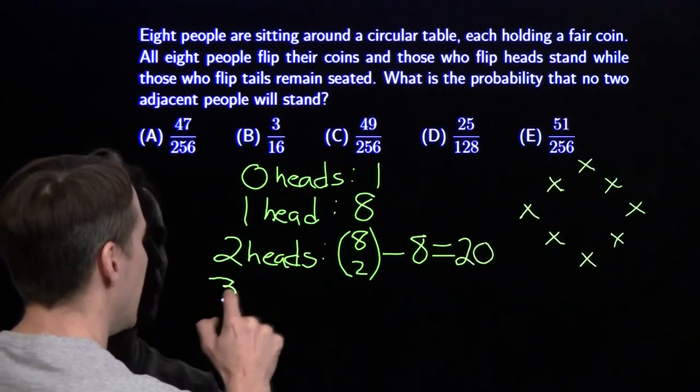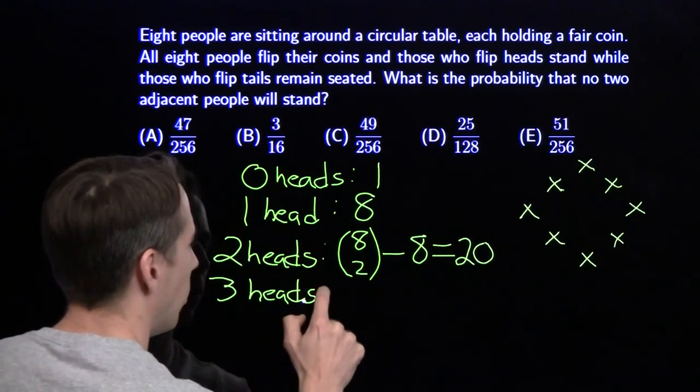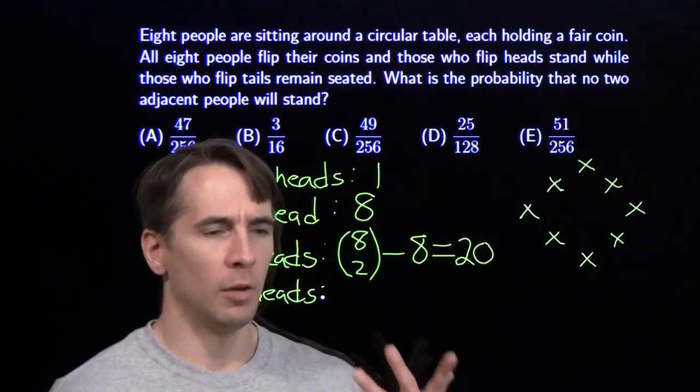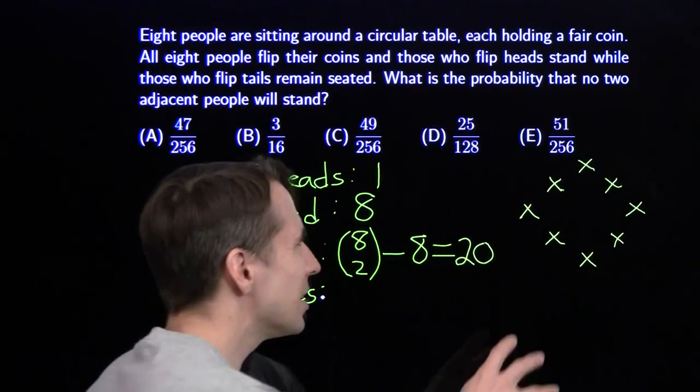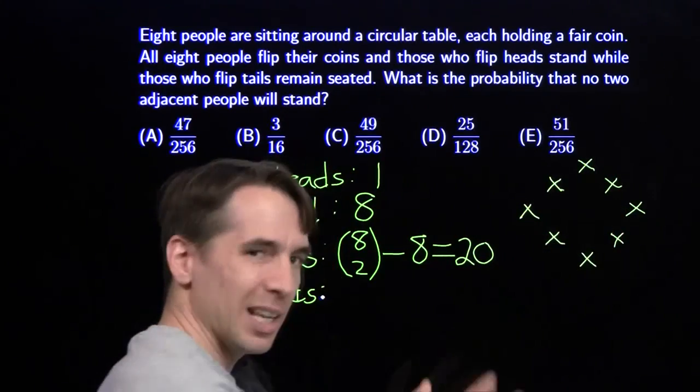So let's move on to three heads. Now, we could go with the same strategy. We could start with the eight choose three and then subtract off the ways if there's three people where at least two of them are next to each other. But, well, let's think about that a little bit. You could have these three, these three, these three. That's not so bad. Go all the way around. There's eight where the three are right in a row.